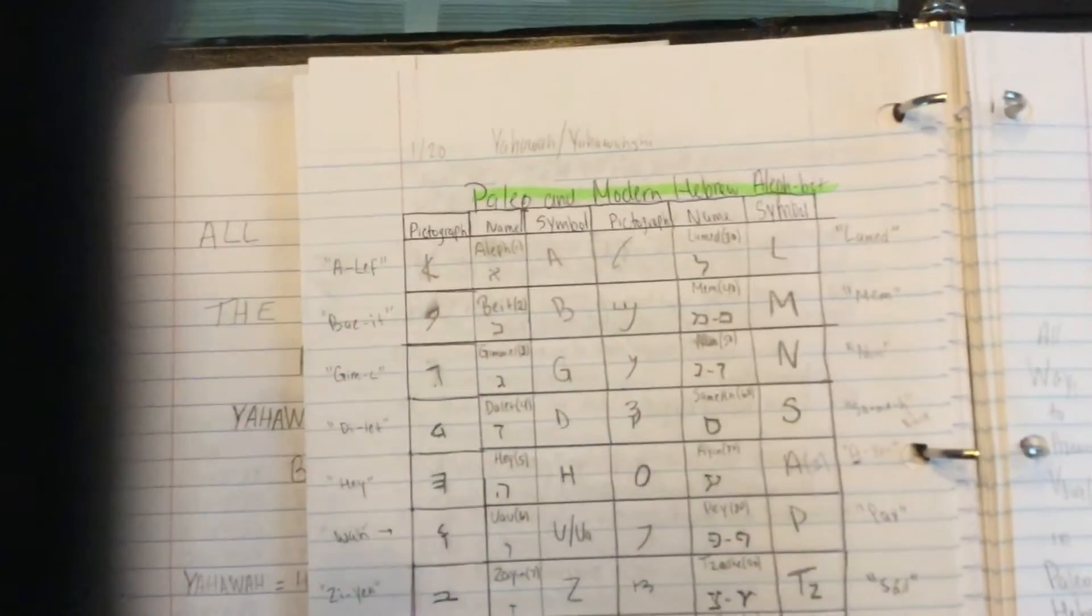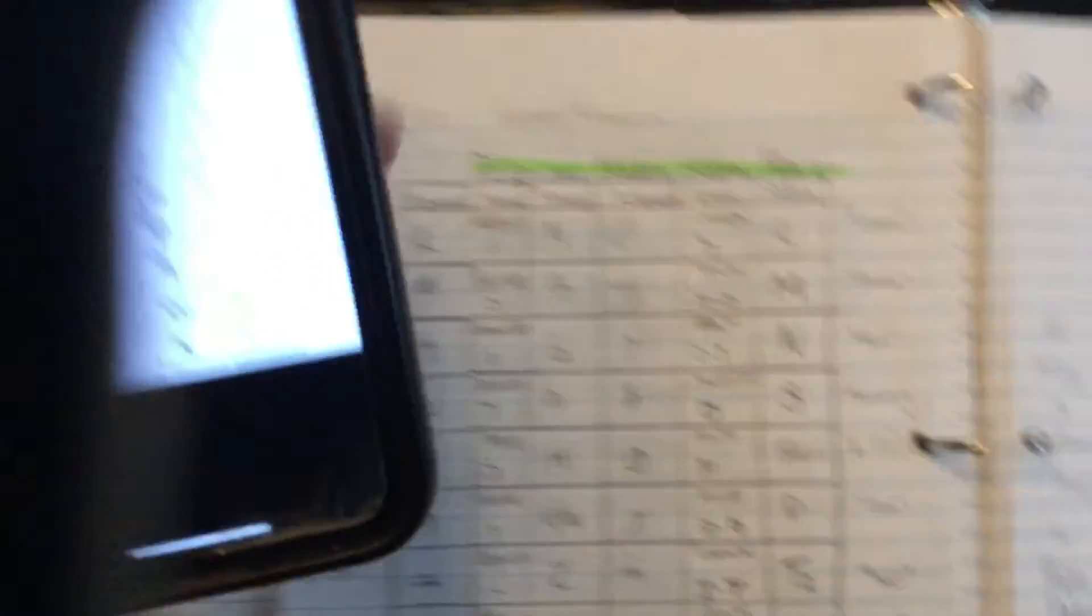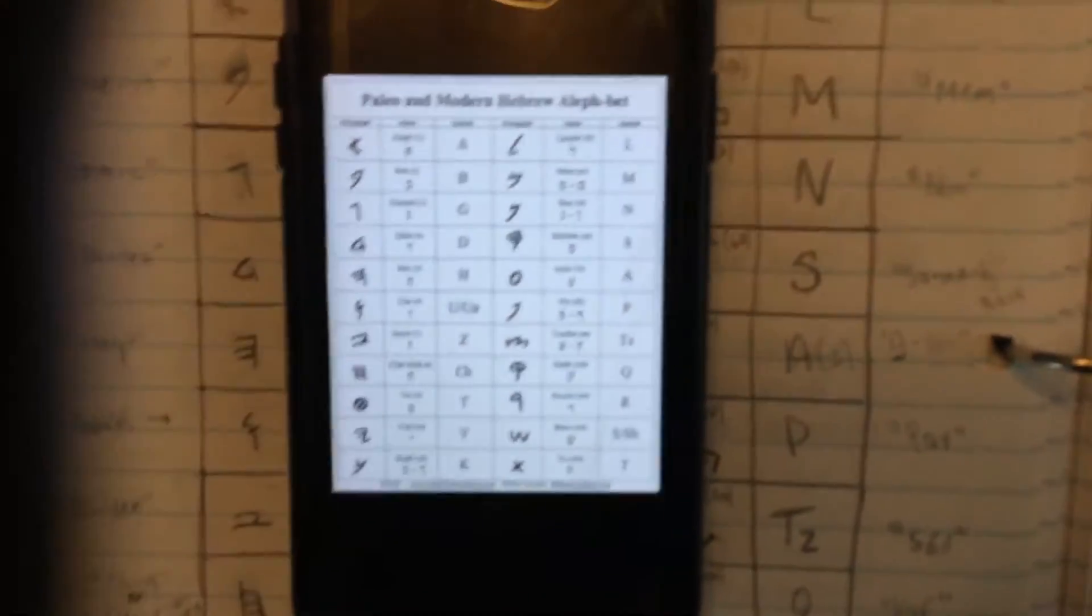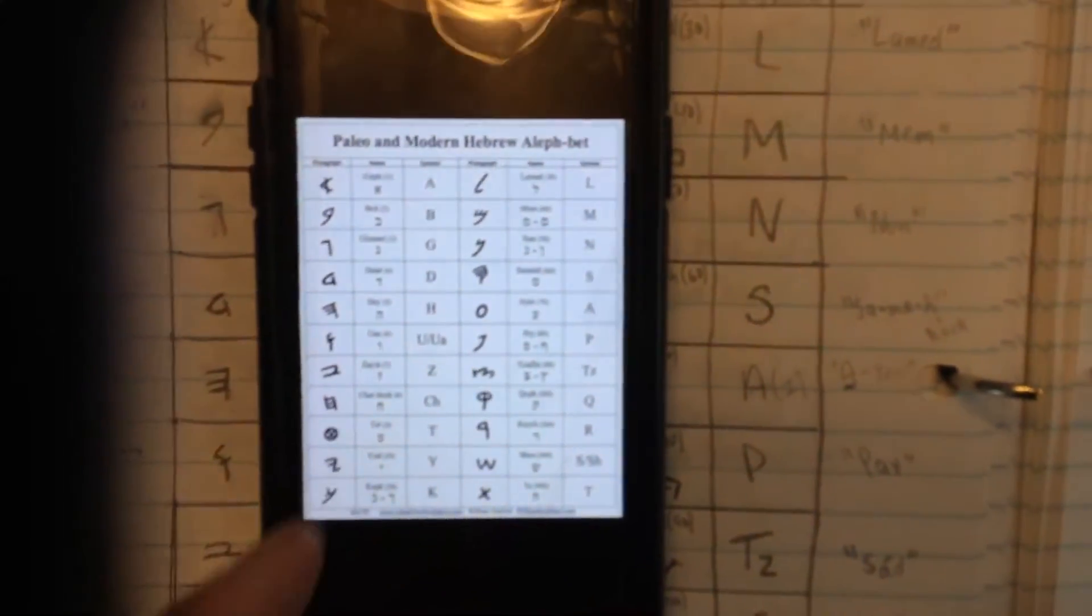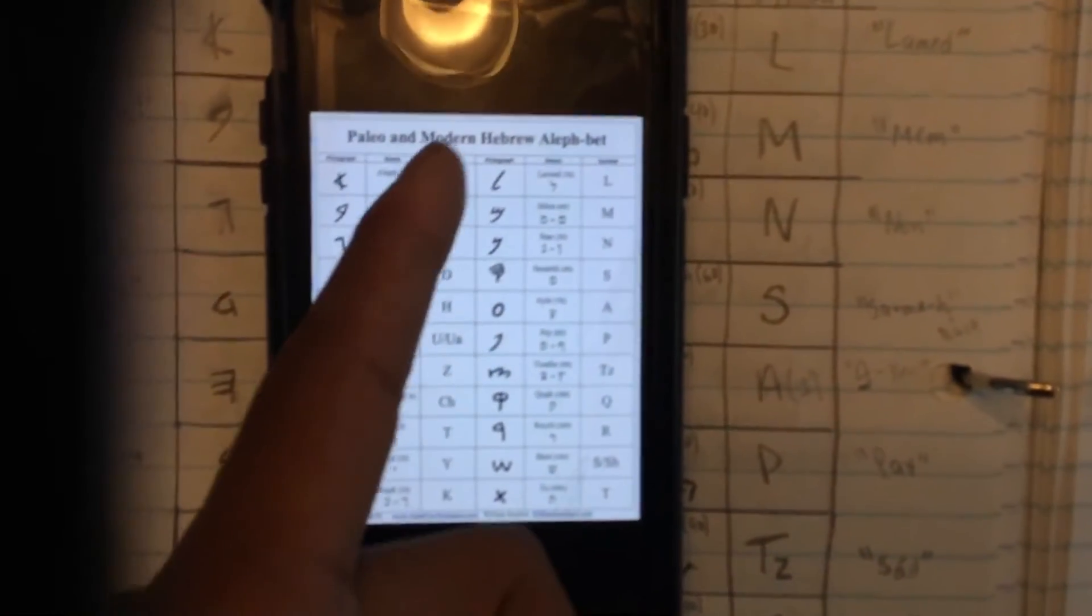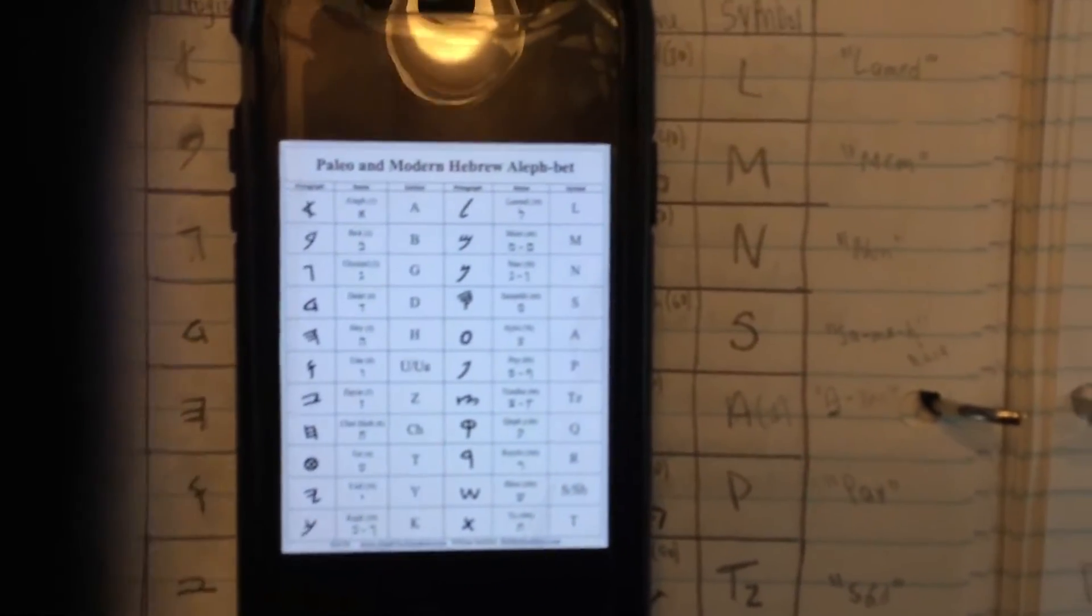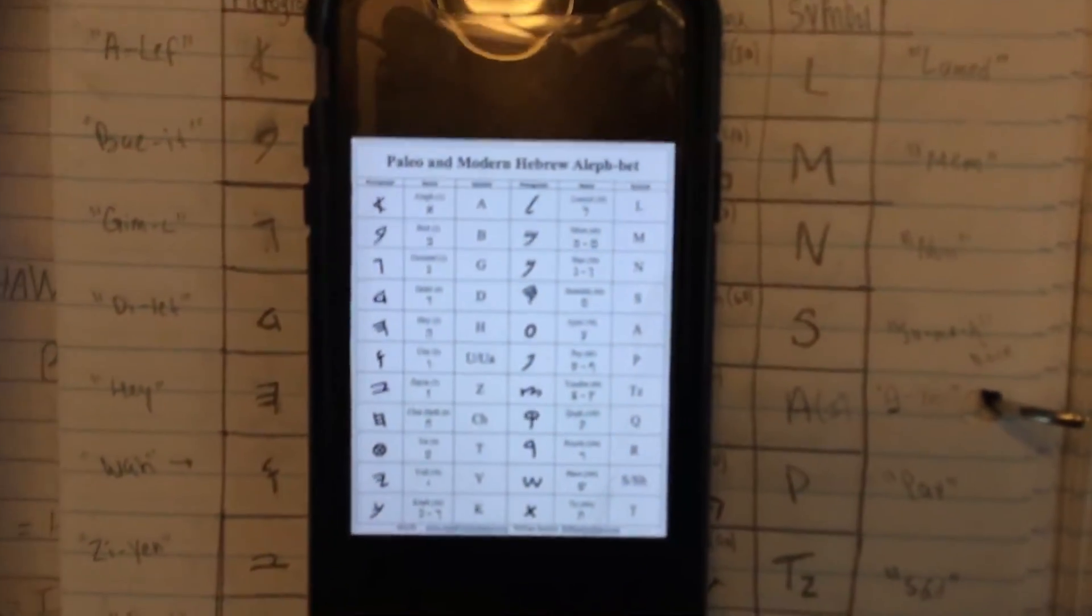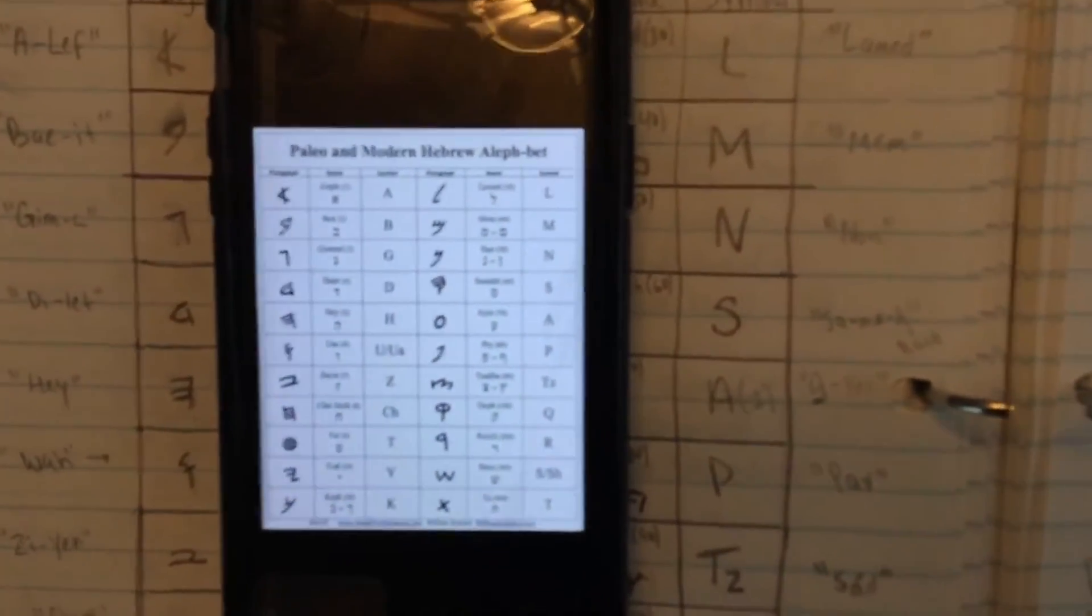This is the entire Paleo Hebrew alphabet right here. I'm gonna pull it up on my phone too, it's more clear. Paleo Hebrew alphabet. So on the outsides, those are the ancient Paleo Hebrew alphabet. The inside right here, the ABC, that's our English translation. And the one in the middle is the Yiddish, that's the Hebrew we use today.